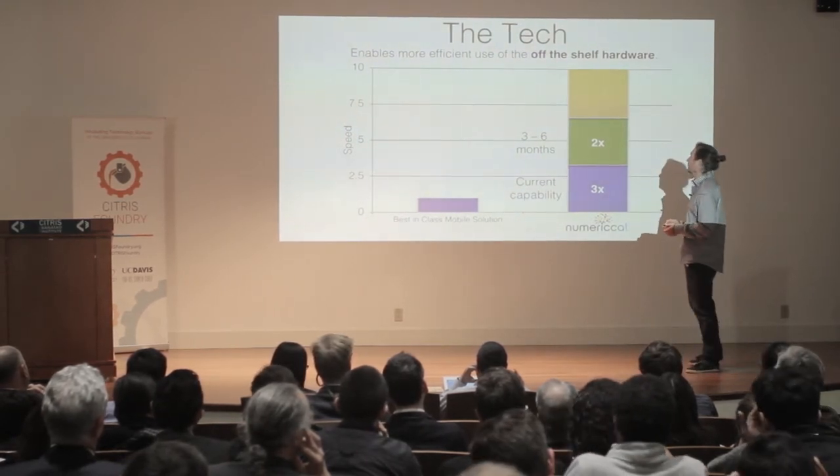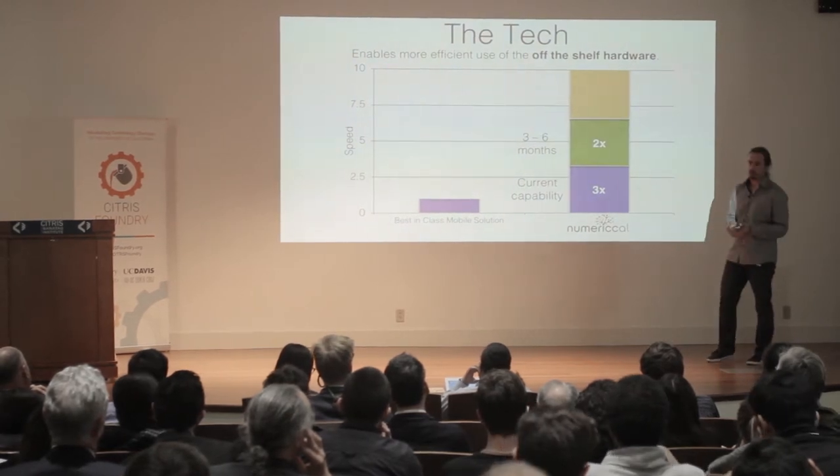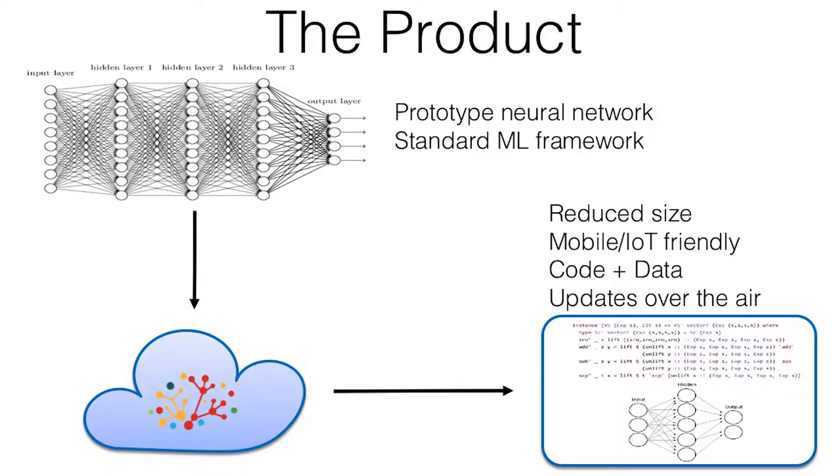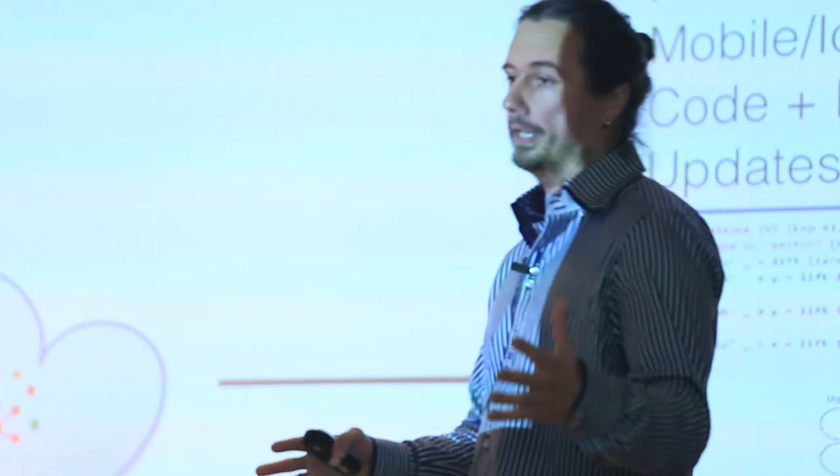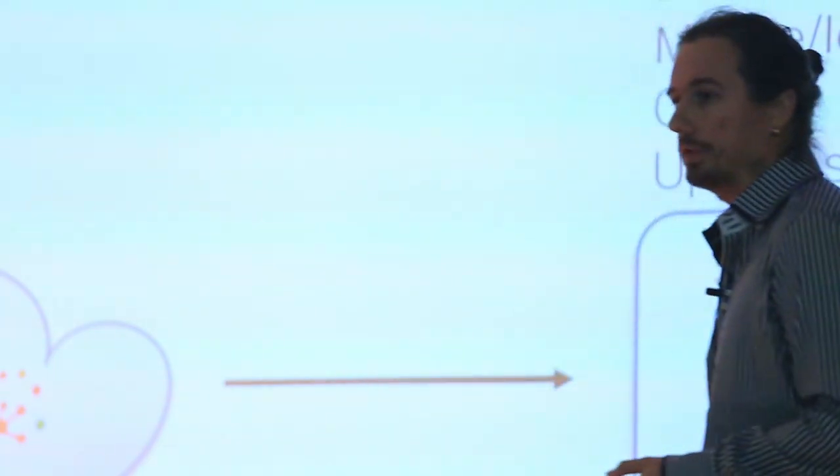We already have a collaboration here in content delivery over internet and compression. Our product is basically a software platform that connects into this cloud infrastructure that people already have in place, takes the large cloud-sized neural network, cuts it down, makes it mobile and IoT friendly, packages all the code and data that you need to do updates over the air.